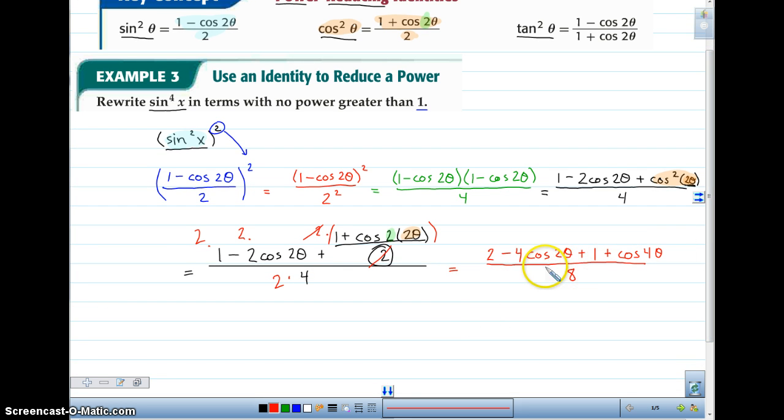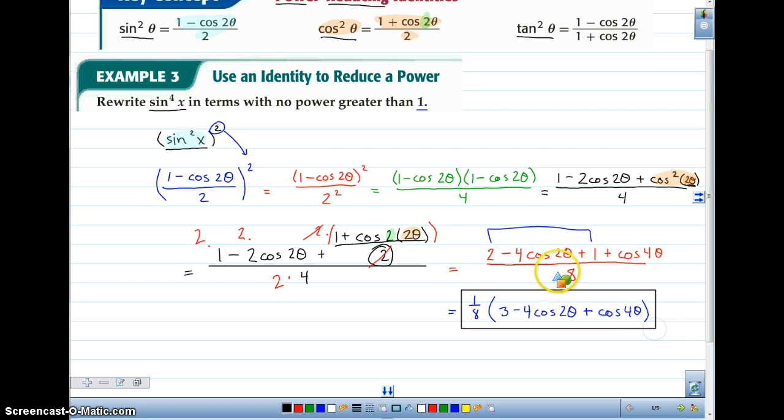And a lot of times you'll see them, instead of writing it with a fraction all over 8, they'll just multiply everything by 1 eighth. So generally you'll see the answer is this 1 eighth times, how we can combine the 2 plus 1 now, that's 3 minus 4 cosine 2 theta plus cosine of 4 theta. That's our power reducing identity. We rewrote sine to the fourth x as this expression with no powers in it anymore. And you'll find this useful in calculus when you are trying to take the derivative of something and you don't want to have to have a high power. Sometimes it's easier to just use the power reducing and have cosine of 2 theta.